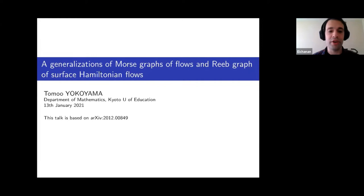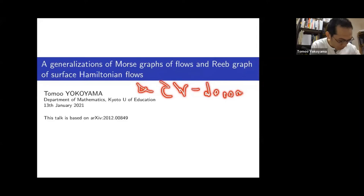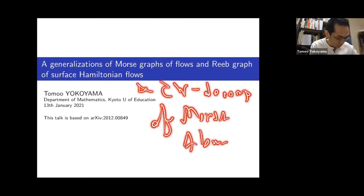The first speaker of today is Tomu Yokoyama, who will be speaking to us about a generalization of Morse graphs of flows and Reeb graphs of surfaces and Hamiltonian flows. Thank you for the introduction and for giving me the opportunity to speak here. Today I'm talking about the topological invariant, which is a generalization of Morse graphs of flows and Reeb graphs of Hamiltonian flows, and the CW decomposition of Morse flows.